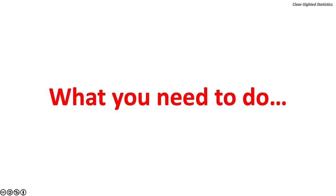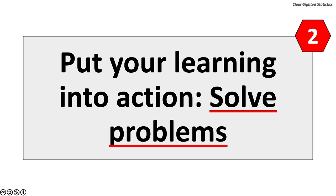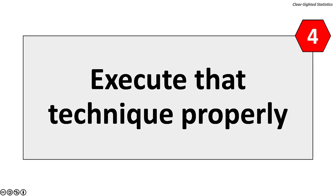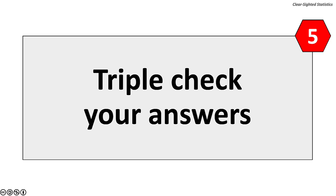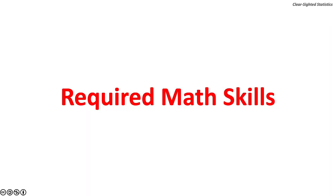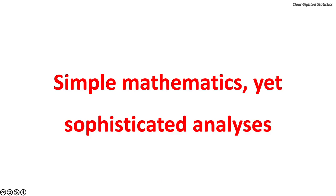Here's what you need to do: 1. Read your textbook carefully. 2. Put your learning into action — solve problems. 3. Be careful to select the correct technique. 4. Execute that technique properly. 5. Triple check your answers. 6. Explain your findings clearly in the context of the problem. You will need the following math skills: basic arithmetic — add, subtract, multiply, and divide positive and negative numbers; work with decimals and percentages; and find square roots and exponents. All you need is basic math skills, acquired by 6th or 7th grade, to conduct sophisticated statistical analysis.